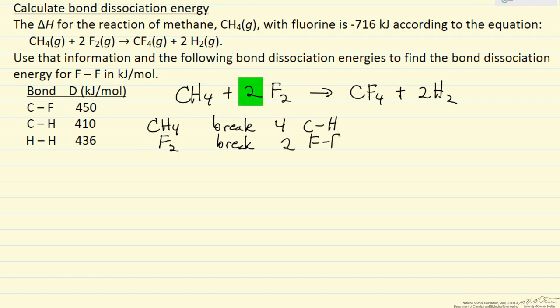The CF4 we form 4 CF bonds. And then H2 we form 2, since there's 2 hydrogen molecules, each has an HH bond, so we form 2 HH bonds.